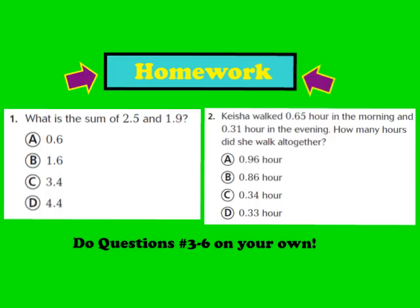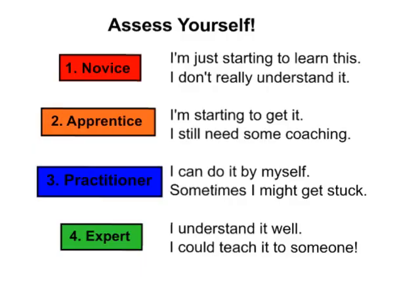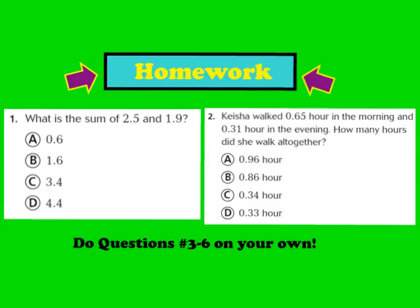For tonight's homework, please complete question number 1 and question number 2, along with numbers 3 through 6, found in your GoMath workbook on page 62. Somewhere on your homework page, let me know if you feel like you're a 1 — novice, 2 — apprentice, 3 — practitioner, or 4 — expert. I hope you have a great evening and we look forward to seeing you at school tomorrow.